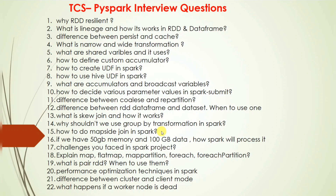You need to explain more about shuffle — how shuffle works in Spark and how it impacts performance. Other topics include map-side join in Spark, and if you have a 10 GB dataset with 50 GB memory, how Spark will process it — you need to explain the distributed parallel processing and the memory parameters in Spark.